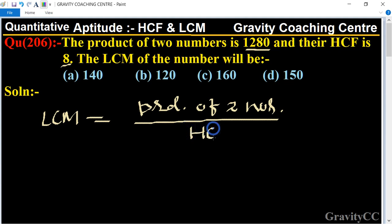And according to the questions, the product of two numbers are given 1280 upon HCF is 8.